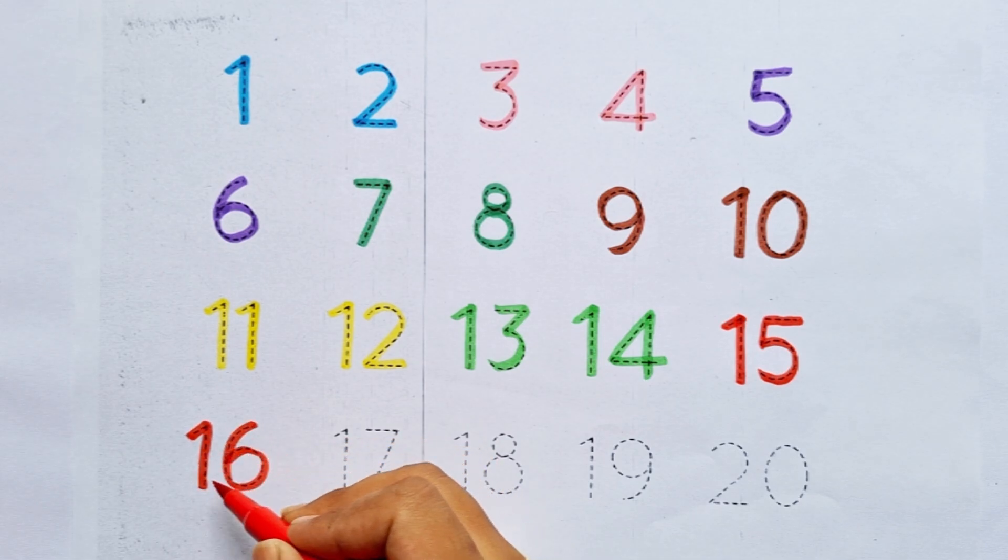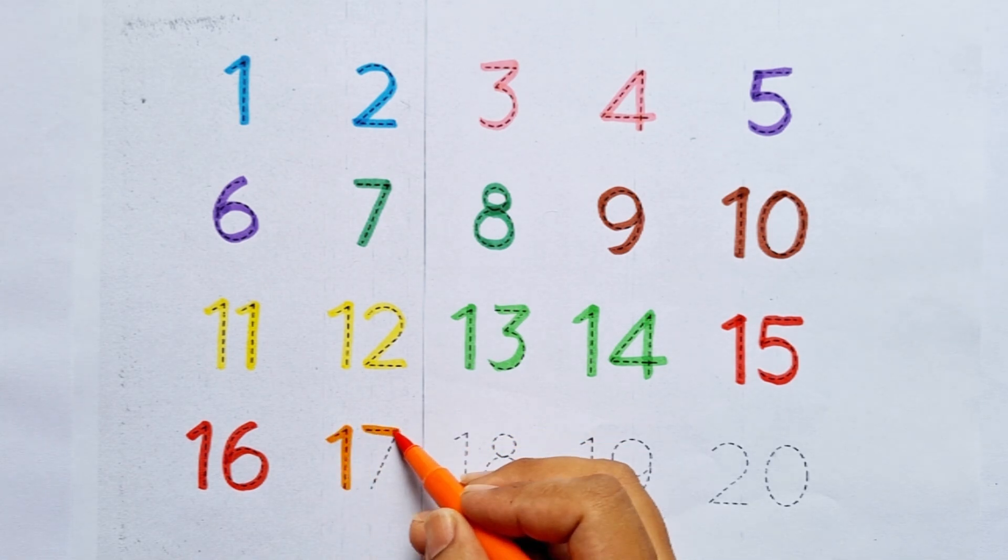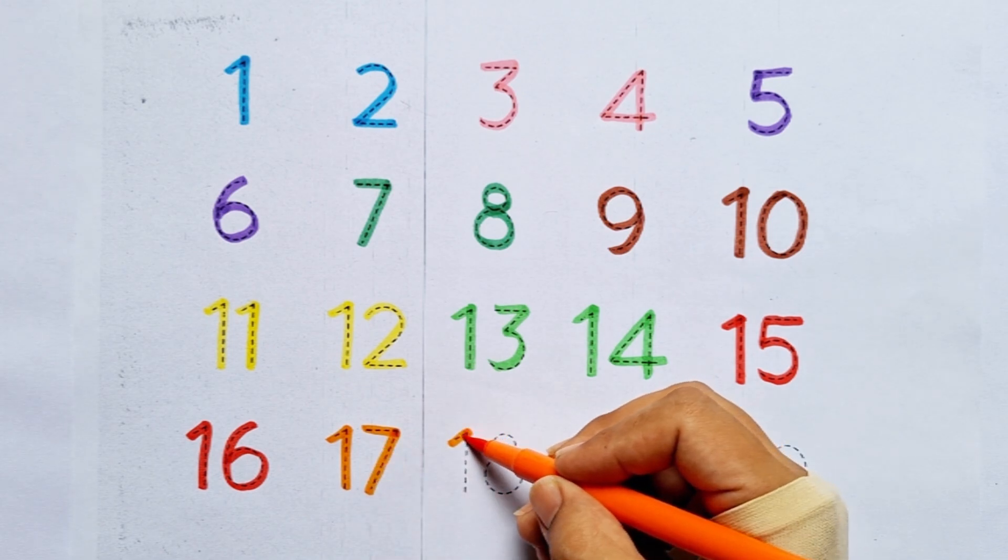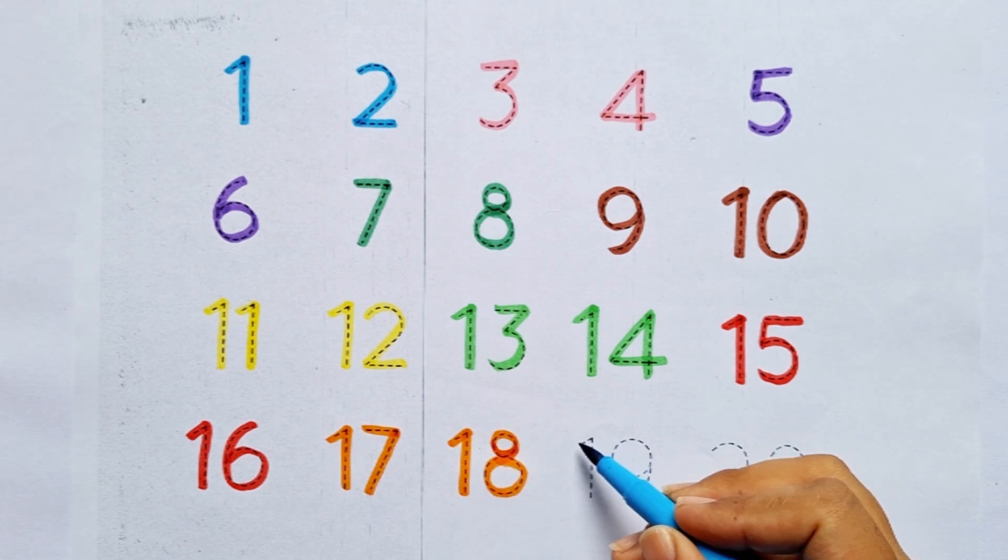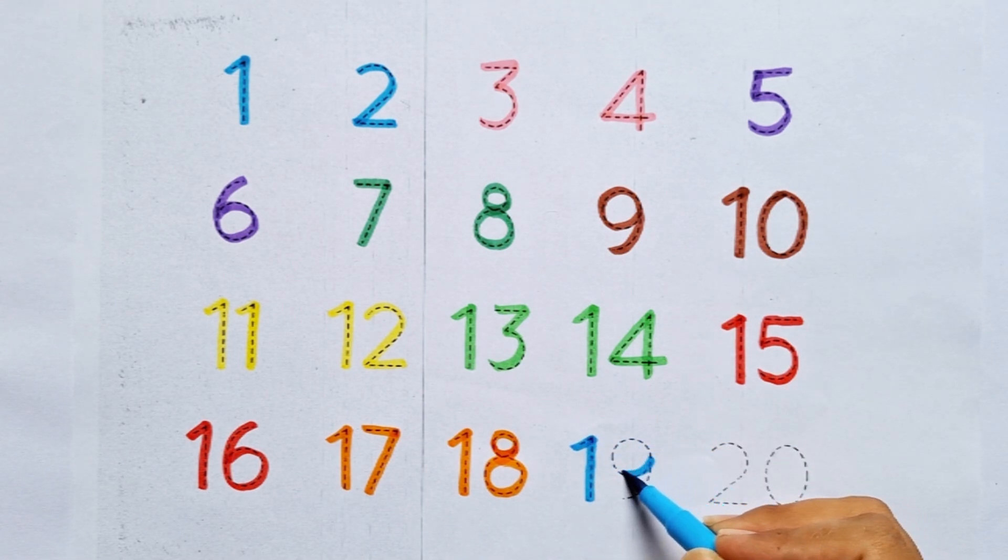fifteen comes sixteen. Seventeen. Seventeen. After sixteen comes seventeen. Eighteen. Eighteen. After seventeen comes eighteen. Nineteen. Nineteen. After eighteen